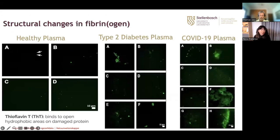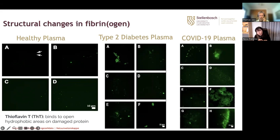To our surprise, we also found misfolded protein in platelet-poor plasma without addition of thrombin — so without activating the clotting pathway in acute COVID-19 plasma. We measured it using thioflavin T, a marker that fluoresces green when bound to open hydrophobic areas on damaged protein. In a healthy individual, fibrinogen has alpha coils and beta sheets, but when fibrinogen interacts with inflammatory molecules like spike protein, the structure changes into insoluble microclots that we can mark with thioflavin T.